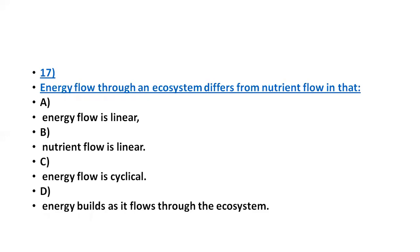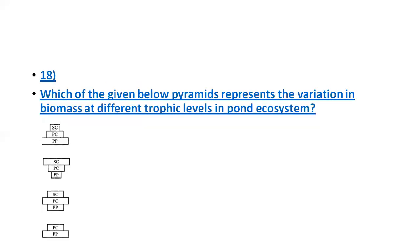Energy flow through an ecosystem differs from nutrient flow in that energy flow is linear — because energy cannot be recycled. For the pyramid of biomass at different trophic levels in a pond ecosystem, the correct answer is option C: primary producers at the base, above them primary consumers, and above them secondary consumers.